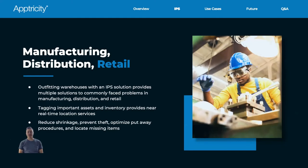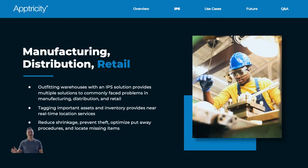Let's get into manufacturing, distribution, and retail — the three areas we decided to focus on for today's session. What we wanted to talk about is how outfitting your warehouses with an IPS solution provides solutions to a lot of the problems you face. You can tag anything — assets, inventory, even personnel — anything that you really need location services for. We mentioned near real-time location services because it takes time for data to be collected and sent to the cloud. That information gets collected by readers and then sent off to the cloud, whether it's to an inventory or asset management system, and those time gaps are starting to shrink.